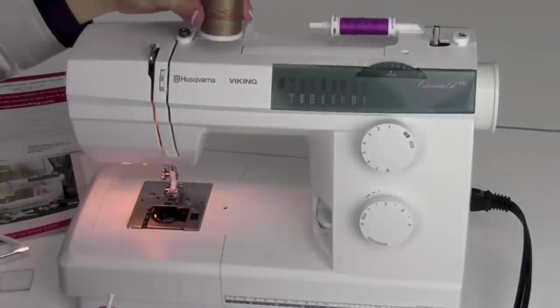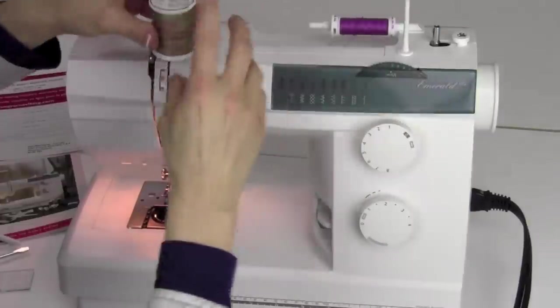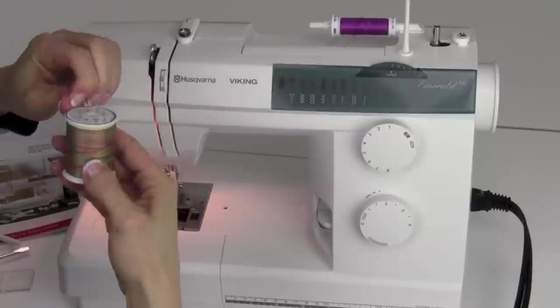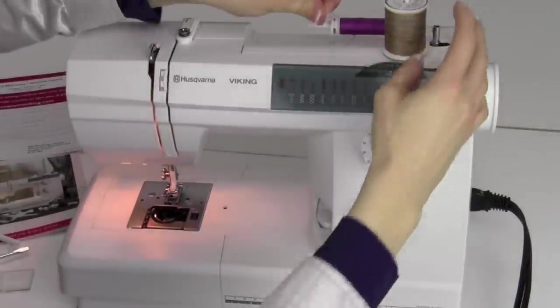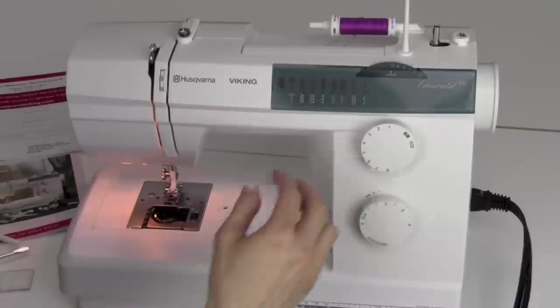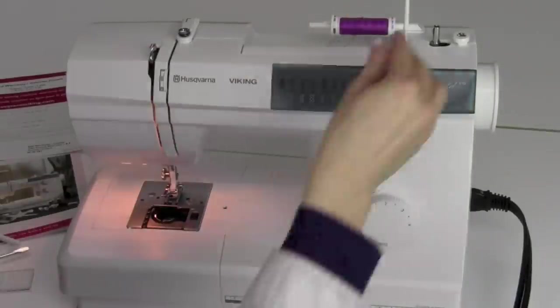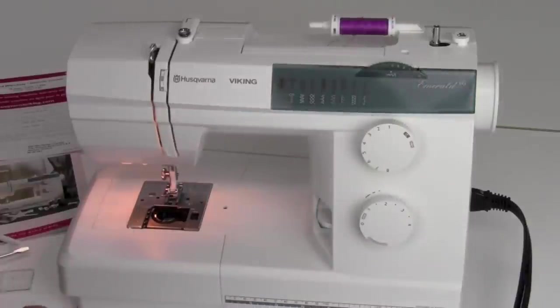Now, if I was using this spool with the thread that's cross-wound, I'm going to pull out the vertical spool cap and then place the thread on it like so, and then it will spin like that. That actually will help in a lot of different types of threads that you're using. Sometimes, depending on how they're set up, they will come off one way better than the other.